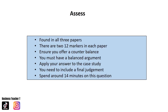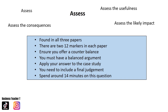There are two 12 markers in each paper — paper 1, 2, and 3 — so it's important that you're proficient in answering them. They tend to start with the command word 'assess': assess the usefulness, assess the likely impact, assess the consequences. This means that your answer needs to look at both sides; it needs to show a counterbalance. You might do this by referring to limitations and drawbacks, and you could introduce this by using words such as 'however', 'on the other hand', or 'in contrast to'.